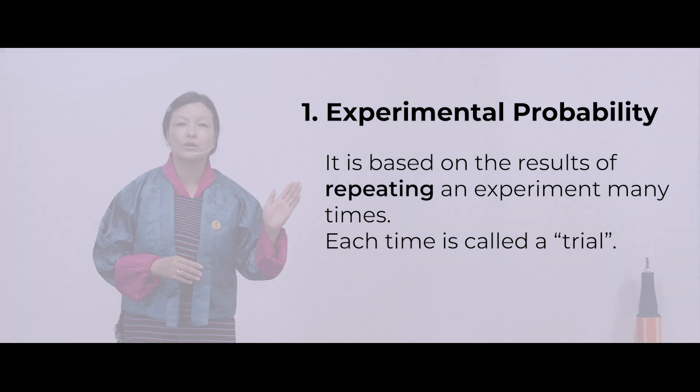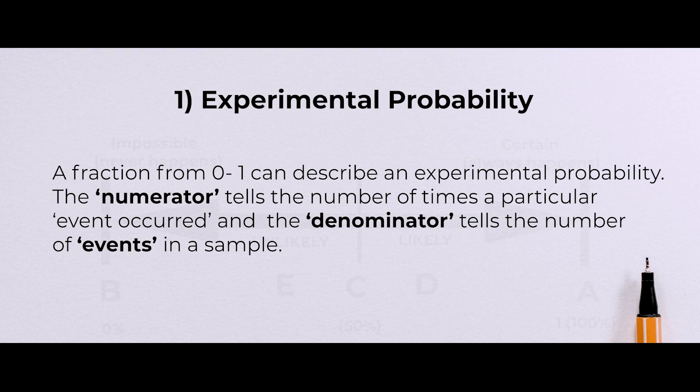A fraction from 0 to 1 can describe an experimental probability. The numerator tells the number of times a particular event occurred. The denominator tells the number of events in a sample. Let's look at the formula for finding the experimental probability.